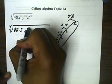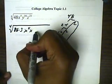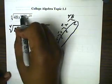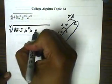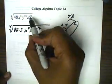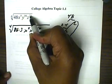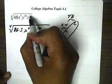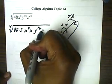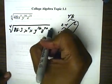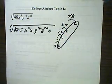Now the x to the fifth, we're going to make that x to the fourth times x. The y to the 16th, this is already in the four timetables, so we're going to keep that. And z to the 21st, that's not in the four timetables, but if I take one single z out and get z to the 20th times z, we can simplify that.